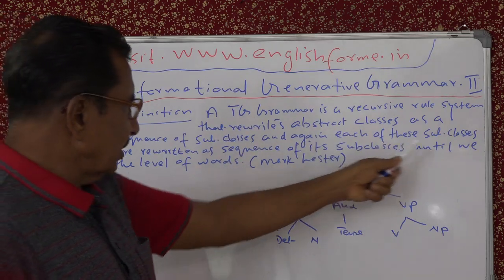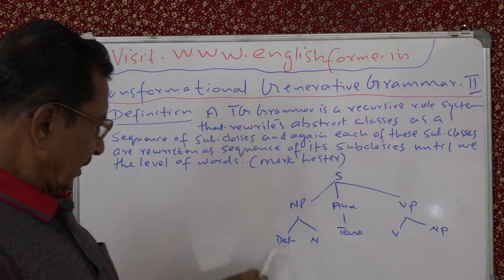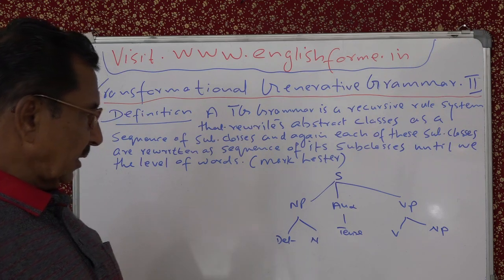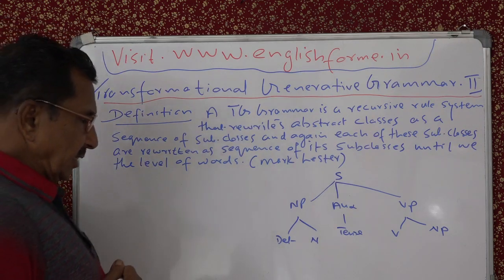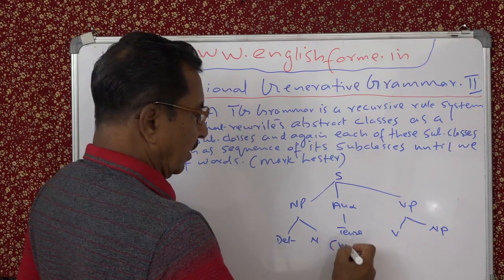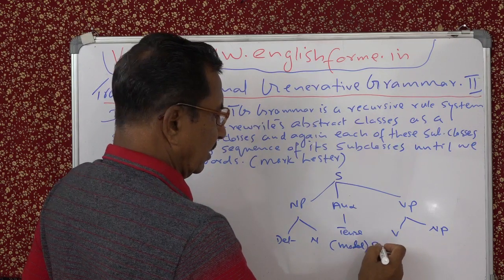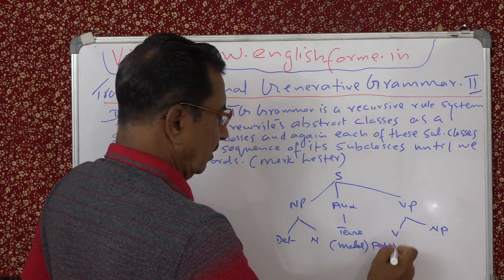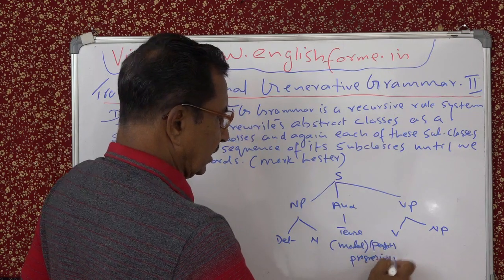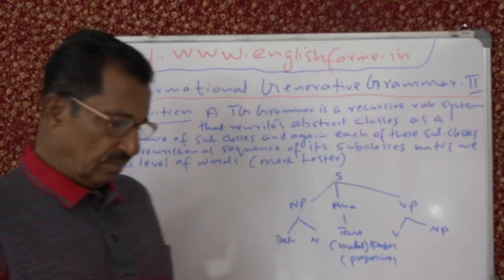Then again each of these subclasses are rewritten as a sequence of each subclass. The terminal noun — subclasses of NP. Auxiliary: tense — and optional items like modal, then progressive, perfect. This we have also seen. Progressive, and then BE and NP also.